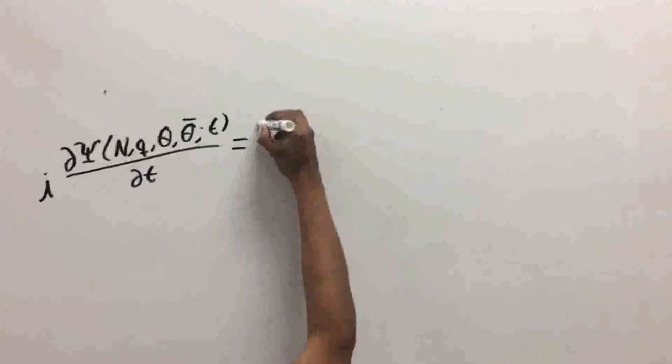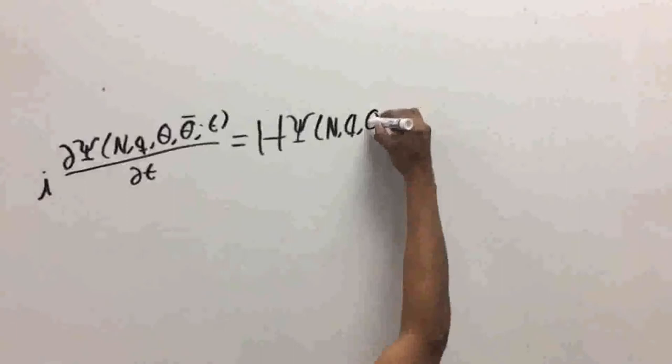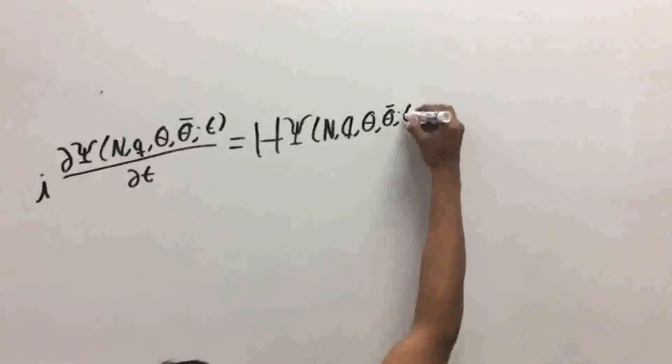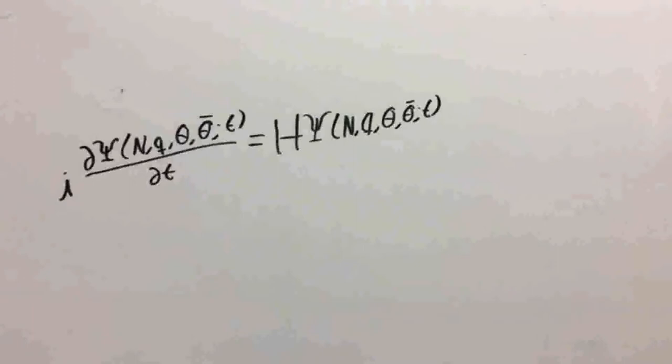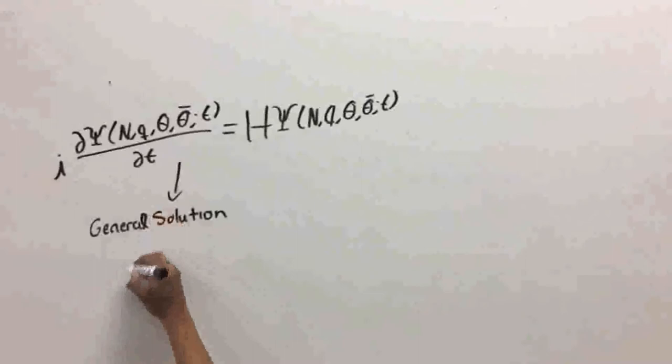where H corresponds to the Hamiltonian operator in extended space, n corresponds to the gauge variable given by a function of q plus a constant, q refers to physical things, theta and theta-daggered correspond to Faddeev-Popov ghosts and t is time. It is important to note that these Faddeev-Popov ghosts represent additional fields that maintain consistency in the path integral in order to obtain the solution for the equation.